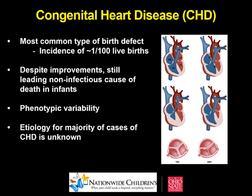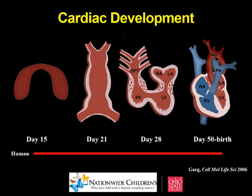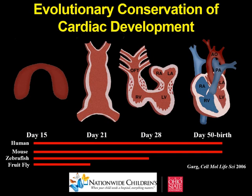There have been many improvements over the past five to six decades in surgical management of these patients, and they are continuing to do better and become adults. But the etiology for the majority of cases is unknown. A congenital heart defect is essentially when the process of normal heart development doesn't occur normally. Around two weeks of gestation, cells that become cardiomyocytes and cardiac progenitors form in the shape of the cardiac crescent. They fuse in the midline to form a linear heart tube that beats around three weeks of gestation, then undergo rightward looping, and by about eight to ten weeks of gestation you have an almost fully mature heart with four chambers and walls dividing them.